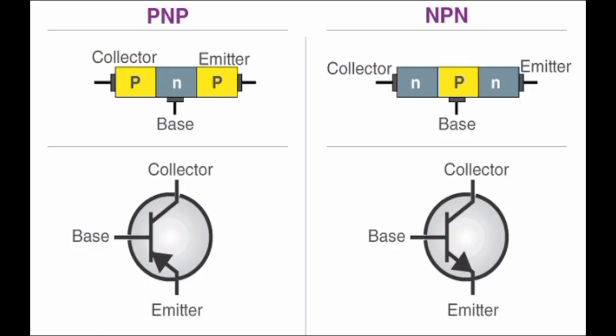A bipolar junction transistor is a three-terminal semiconductor device that consists of two PN junctions which are able to amplify or magnify a signal. It is a current controlled device.